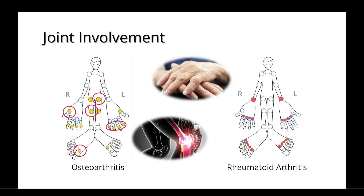Rheumatoid arthritis, on the other hand, usually involves the wrists, the proximal parts of the feet, and the proximal parts of the hands, or the knuckles. Although it's important to note that rheumatoid arthritis can affect any joint, and will typically cause pain and swelling in affected joints.